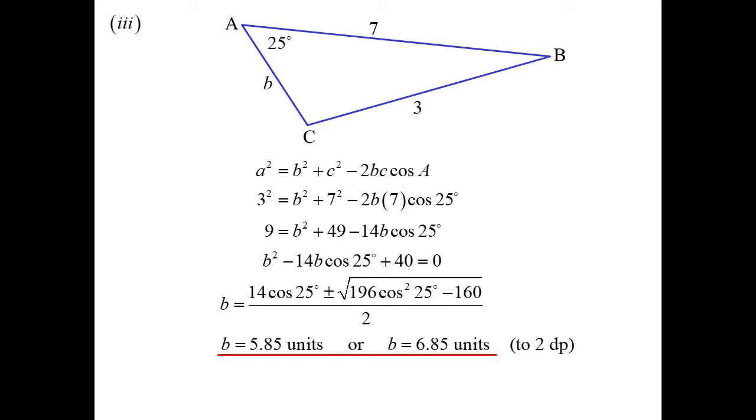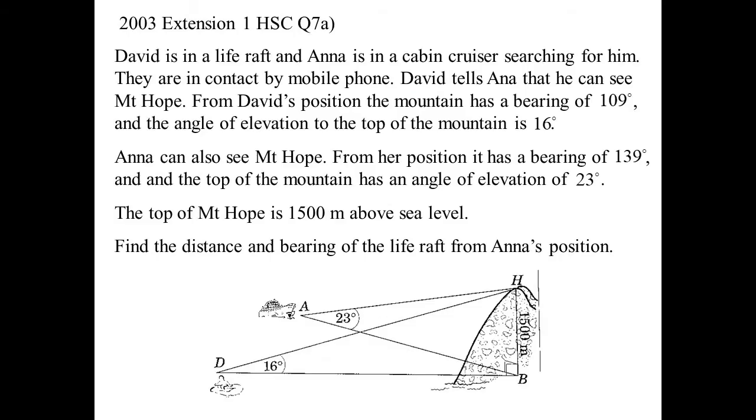But here's the thing. I don't know which one's the answer unless they give me more information. It is actually possible to construct two triangles with those dimensions. One where B is 5.85. Another where B is 6.85. So unless they were to give me more information, I don't know which one of the two triangles they're talking about. So I give both possibilities.